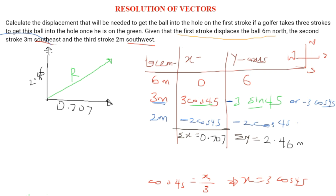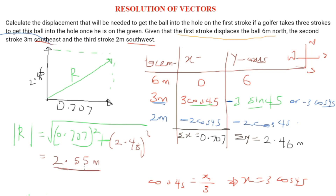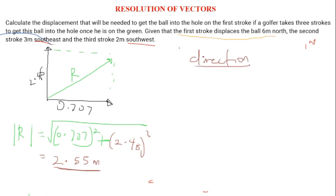Using the Pythagorean theorem, r equals the square root of (0.707 squared plus 2.46 squared). If you compute this correctly, you get r equals 2.55 meters, which is the total displacement of the resultant vector.